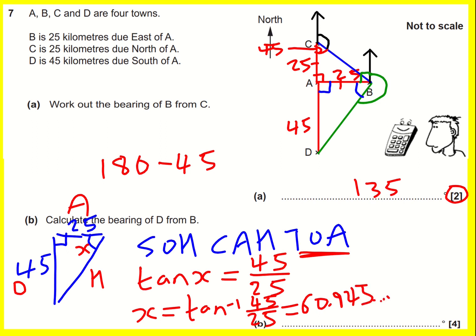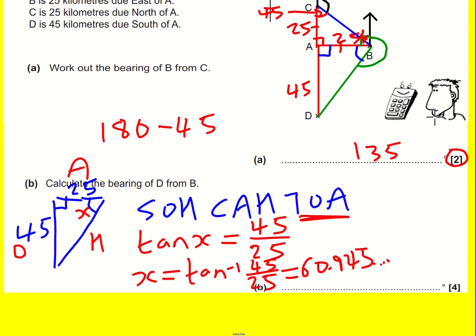I'm nearly there. So now if I want the green angle, it's going to be not this bit, just this bit. It's going to be 270 minus 60.945.